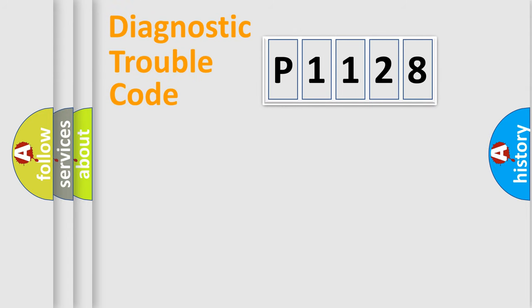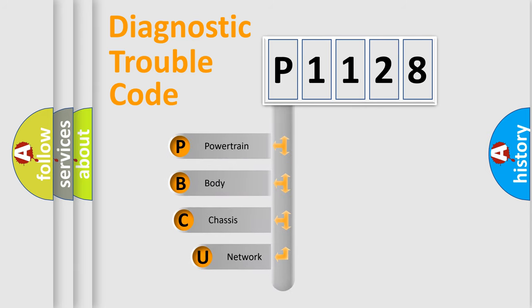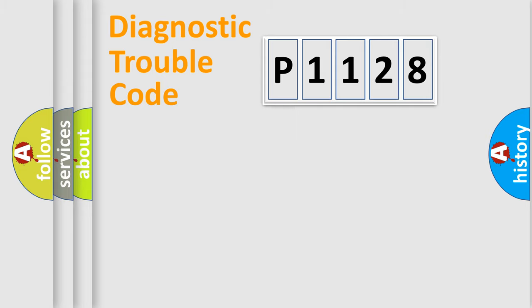Let's do this. First, let's look at the history of diagnostic fault code composition according to the OBD2 protocol, which is unified for all automakers since 2000. We divide the electric system of the automobile into four basic units: Powertrain, Body, Chassis, and Network.